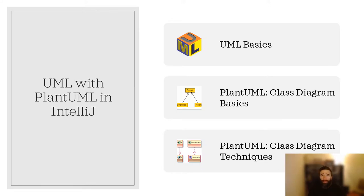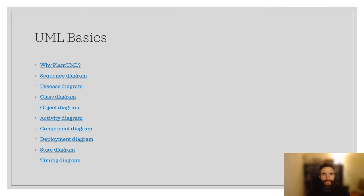In the UML basics section, we'll cover why PlantUML is a good option when choosing a UML creator and the UML diagram options available in PlantUML. In the Class Diagram Basics and Class Diagram Techniques sections, we'll cover a step-by-step guide on a very familiar UML class diagram. In each diagram example, I will cover the diagram type, provide an example of PlantUML syntax, a visual representation of that particular UML diagram, and when it's best to use that diagram.